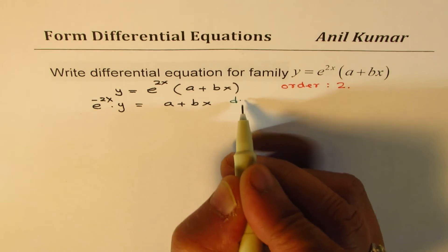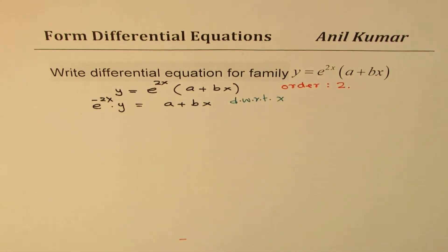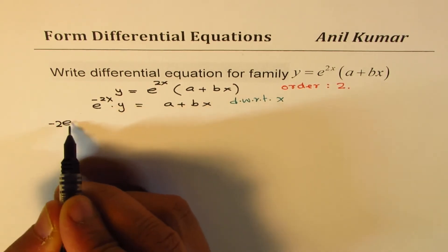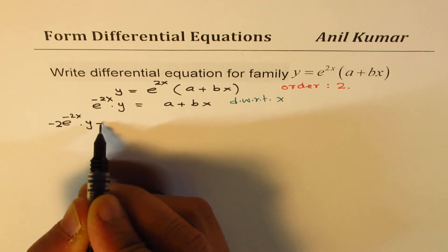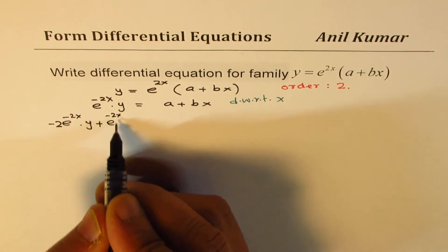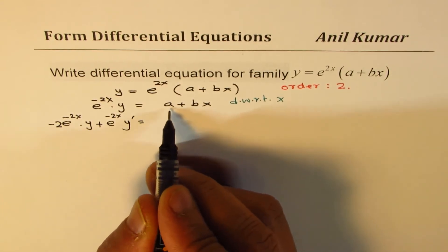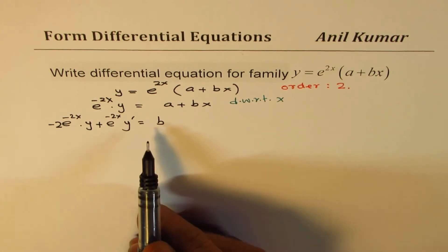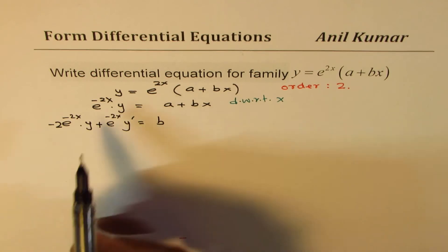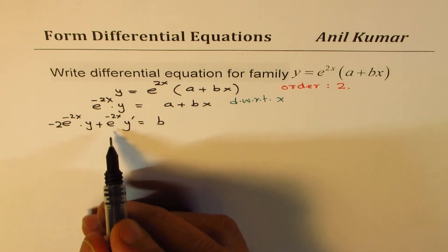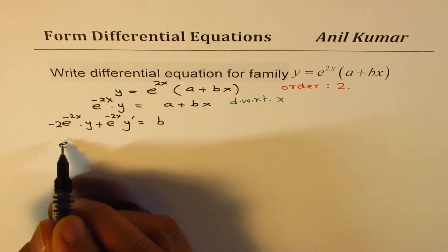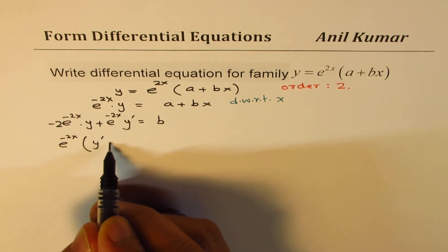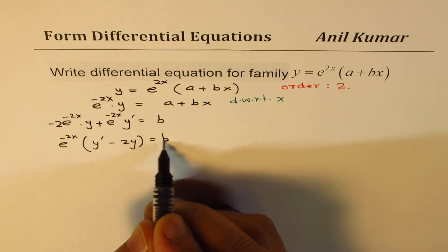Now let's differentiate with respect to x. Applying the product rule gives -2e^(-2x)·y + e^(-2x)·y' = b, since the derivative of a is 0. Taking e^(-2x) common, we get e^(-2x)(y' - 2y) = b.